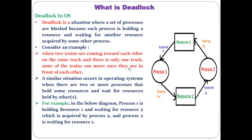Now, in what case can deadlock occur in the operating system? We already explained the real-life examples of the bridge and the train. Now let's see the deadlock situation in case of the operating system. A deadlock is a situation where a set of processes are blocked — meaning neither of those processes is able to utilize the resource they need; they are in a halted situation.